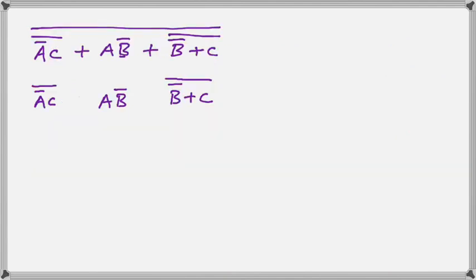Now we're ready to apply the rule to our first problem. Notice I've written the sub-expressions with space between them and the big bar or great bar that goes over everything completely removed. Here's what we do. We have changed from an or to an and and we have put a bar over each of the sub-expressions.